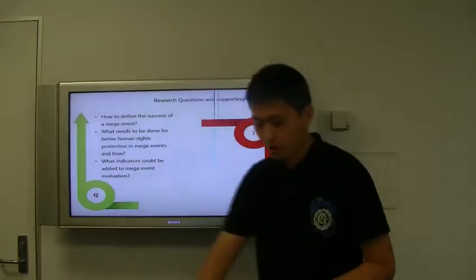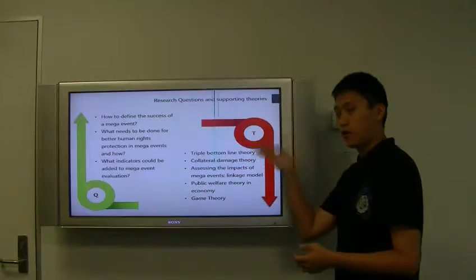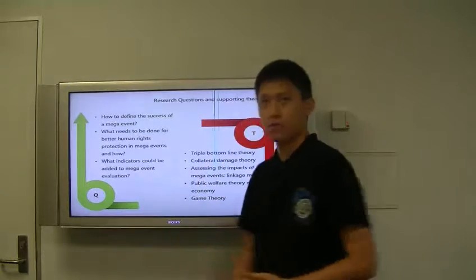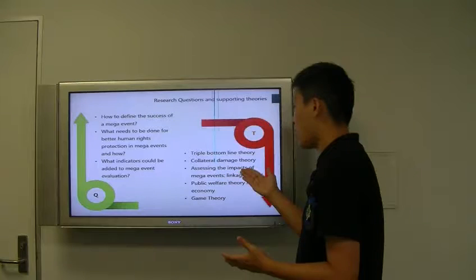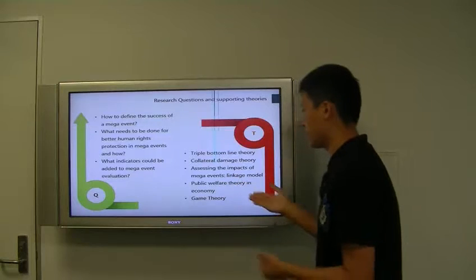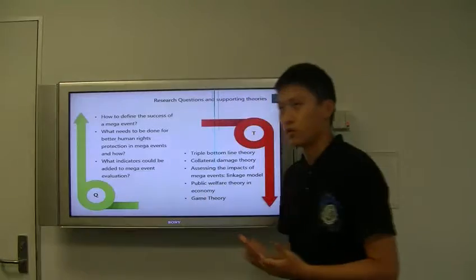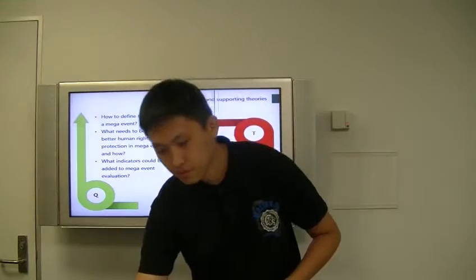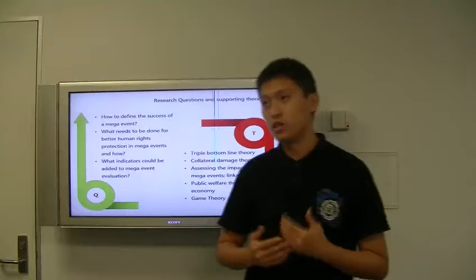And for the theories, maybe the triple bottom line theory to make a better balance, to realize every stakeholder's benefits. And collateral damage theory, assessing the impacts of mega events, the linkage model, public welfare theory in economics. And another very famous theory in the area of economics, the game theory, because it is a process of gaming. So all of these theories will be discussed in detail in my further report.